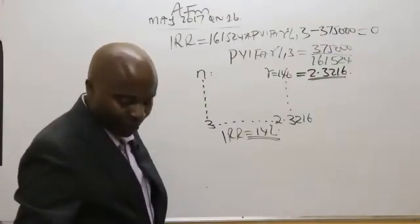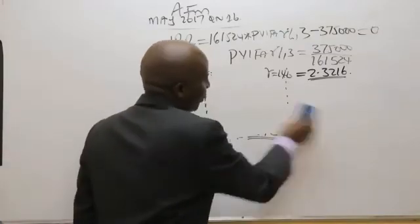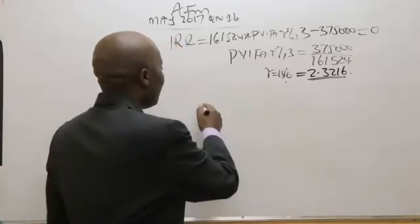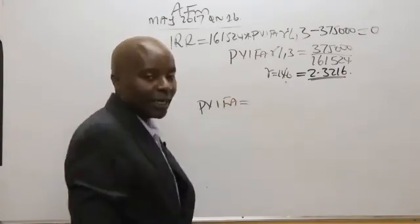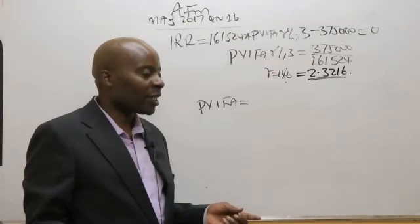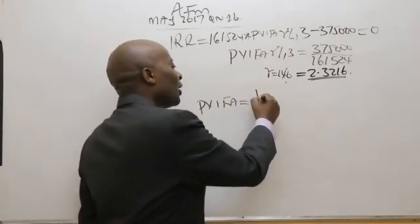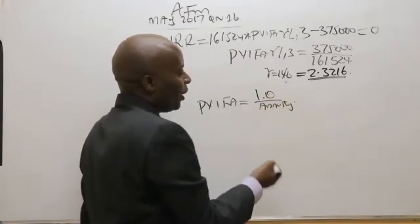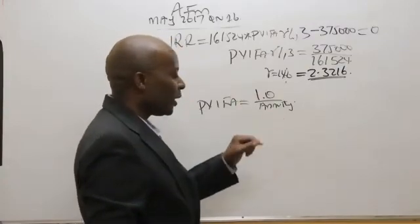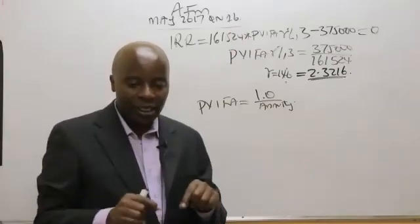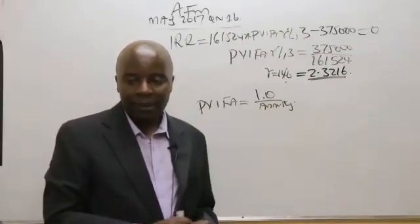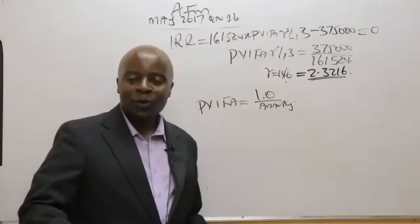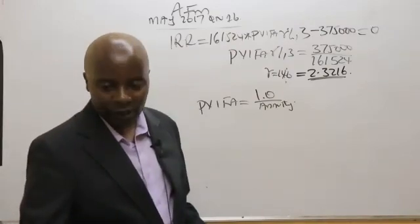There is a shortcut: whenever they want you to give the IRR for an annuity cash flow project, you take PVIFA to equal the initial outlay divided by the annuity cash flow. Whatever figure you get, you locate it in your tables and read the rate of return from the top. I'm sure you students would have gotten this correctly.